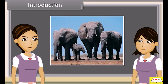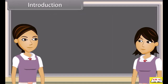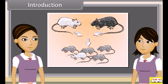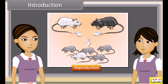We know that reproduction is the ability of all organisms to produce young ones similar to themselves in most characters. We can also say the process by which a species is continued is called reproduction.